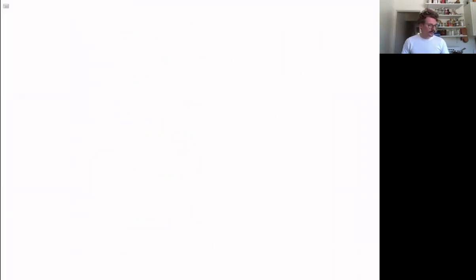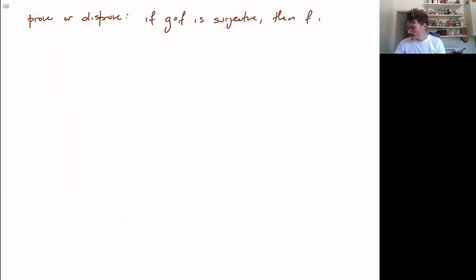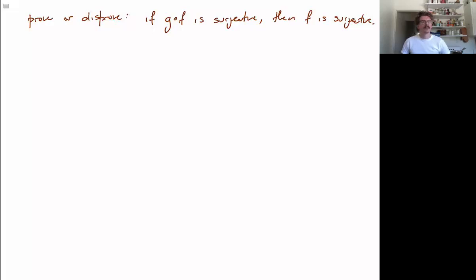Let's ask a related question, but slightly different. So another prove or disprove, same setup as last time. But now: if the composition g∘f is surjective, then f is surjective. We want to prove or disprove this fact. And if we think about the example we did before, nothing really seemed to go wrong there — it wasn't for the same situation, but nonetheless, according to that example, there's no real reason to suspect otherwise.